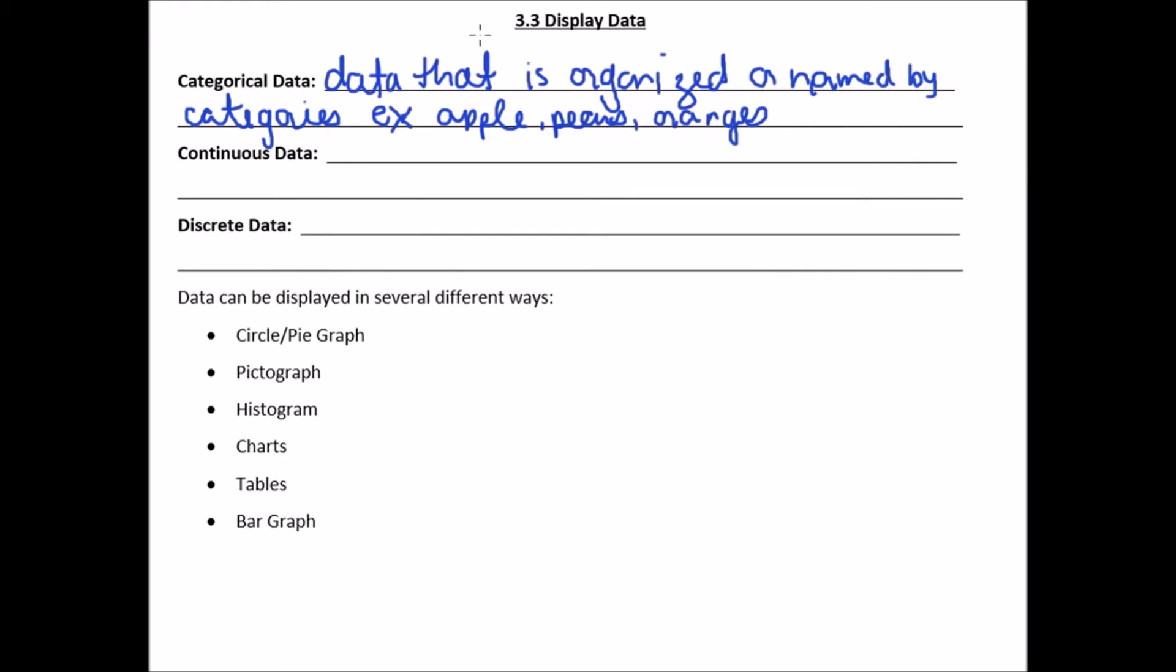Okay. Versus numerical data, which is data that's organized by numbers. Okay. Continuous data and discrete data. Continuous data can take on any number. And when we say any number, we think of decimals.